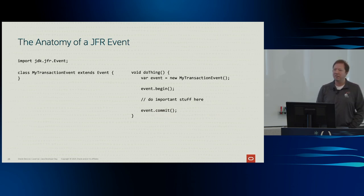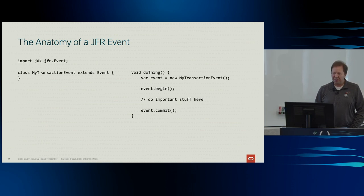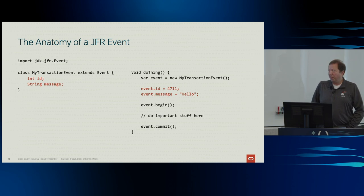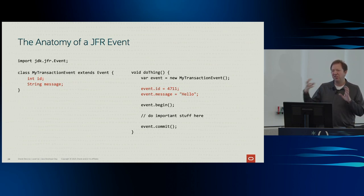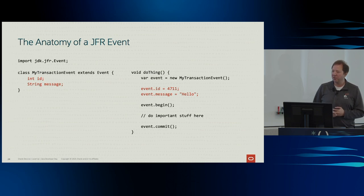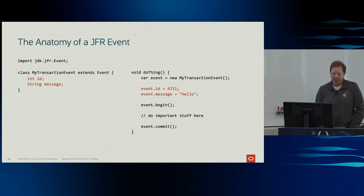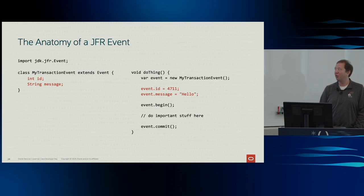In itself, just capturing the event isn't very interesting — the only thing we get is the event itself. We may want to include some business-logic-specific information. The way we do that should be very natural: we just add some fields to the event type. In this case, I've added an ID field representing a transaction ID, and also a message field — but this could be literally anything that makes sense for your specific business operation. On the business logic side, you initialize these fields in the normal way. You'd obviously use the real transaction ID and maybe the URI for the request.